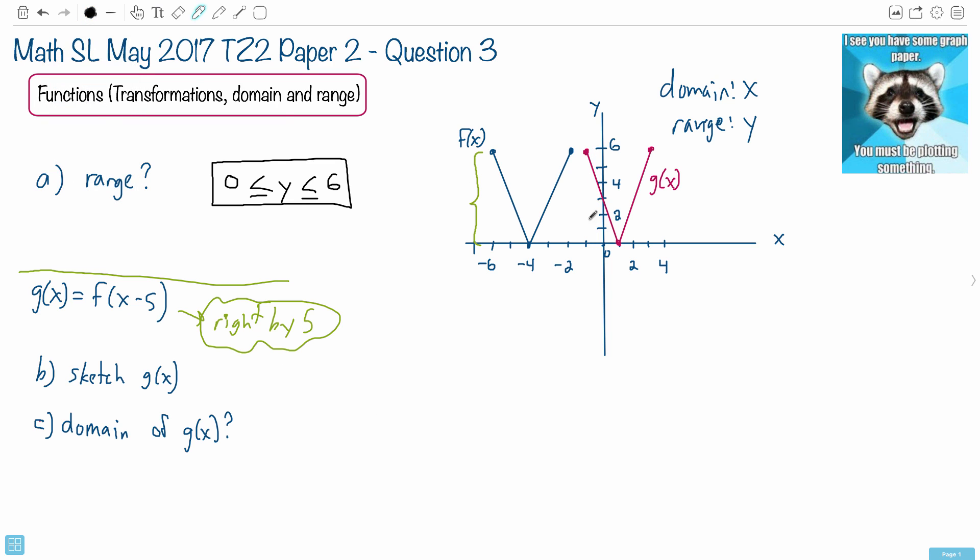We're going to say it's defined from x equals minus 1 all the way up until right here, x equals 3. So it goes from minus 1 all the way up to 3. So what I do, I put in a minus 1, I put in a 3.